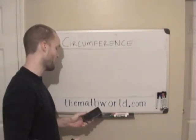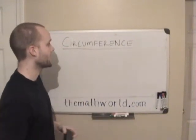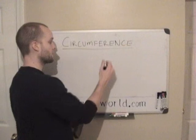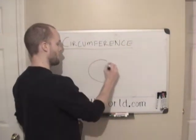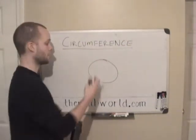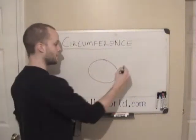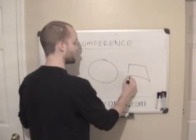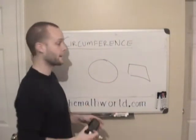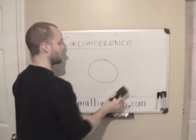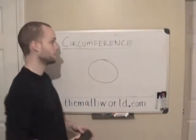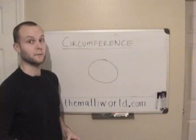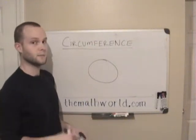Hey everyone, this is Kevin from TheMathWorld.com and today we're going to be looking at circumference. Circumference is the perimeter of a circle. A lot of times you'll say find the perimeter of a rectangle or square, but when you're finding the perimeter of a circle, it's called the circumference, and you'll see this a lot in geometry.